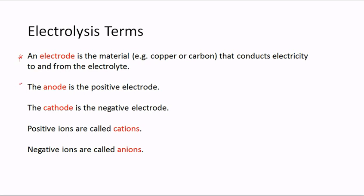The anode is the positive electrode — the copper or carbon connected to the positive terminal of the cell or battery. The cathode is the negative electrode and is connected to the negative terminal of the cell or battery.